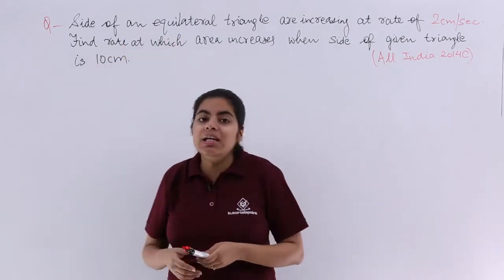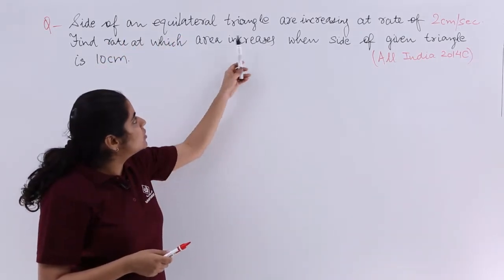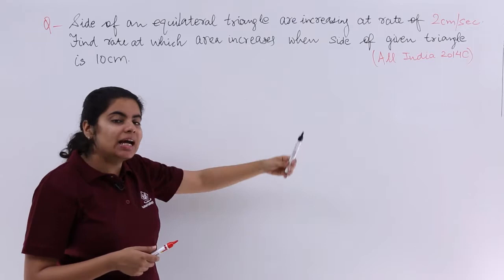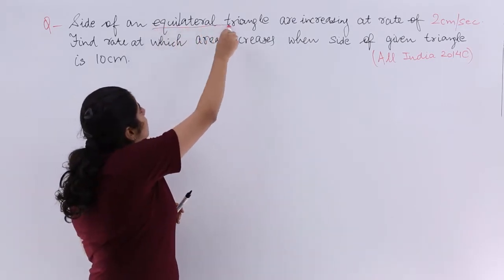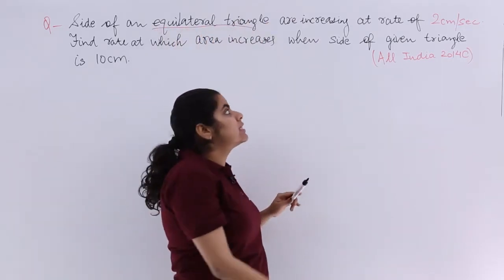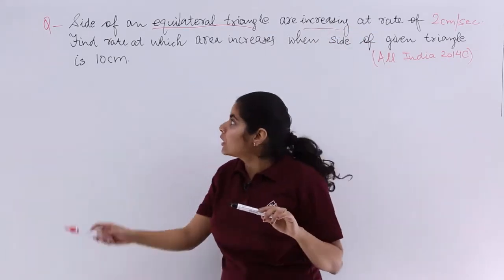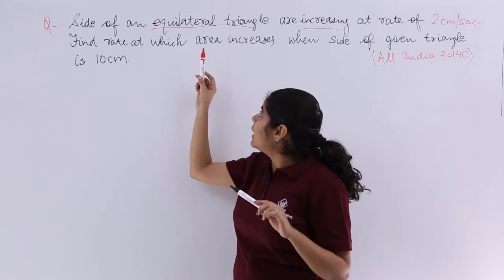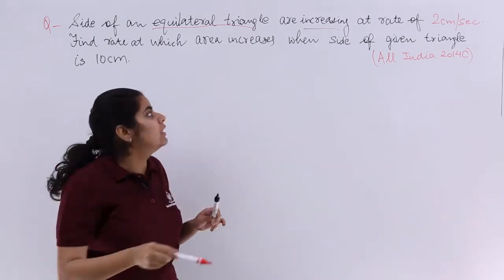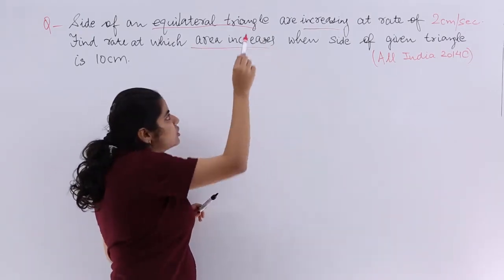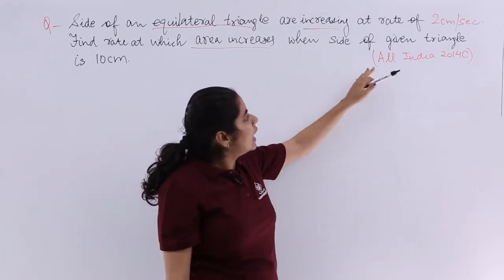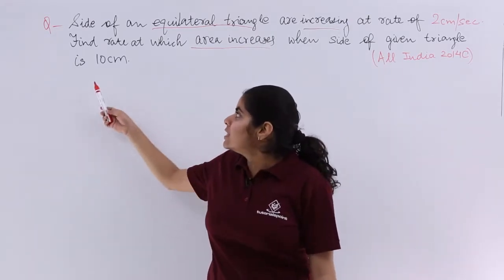It says side of an equilateral triangle, so we are talking about an equilateral triangle and its side is increasing. Side increasing at the rate of 2 cm per second. Find the rate at which the area is increasing. So you have to find the rate of change of area, especially increase of area when the side of the given triangle is 10 cm.